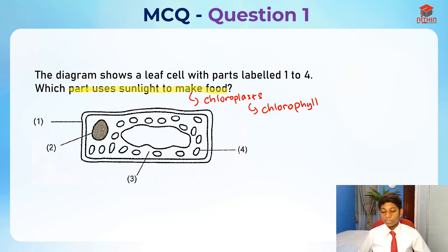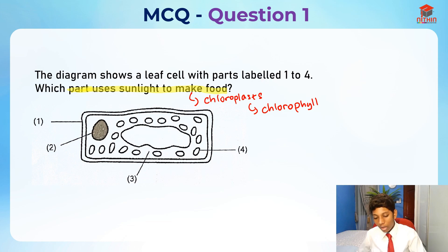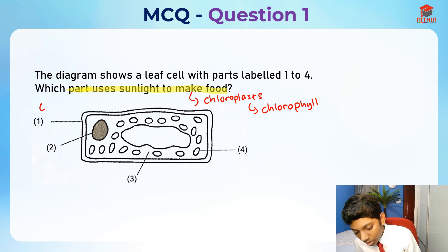As you can see, there are actually many parts in a leaf cell. Part 1 is pointing to this here. What is this part over here? I bet you all know — it's the cell wall.